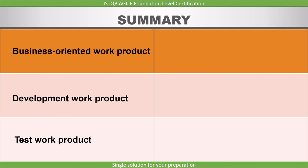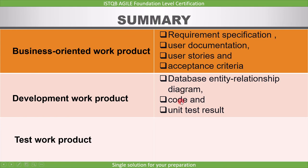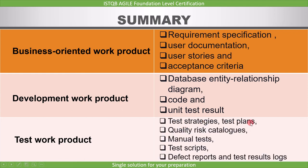To summarize: in this lecture, we covered three work products relevant to the tester — business-oriented work product, development work product, and test work product. Requirement specification, user documentation, user stories, and acceptance criteria are the work products of the business task. Database entity relationship diagram, code, and unit test results are the work products of the development task. And test strategies, test plans, quality risk catalogs, manual tests, test scripts, defect reports, and test results logs are the work products of the testing task.